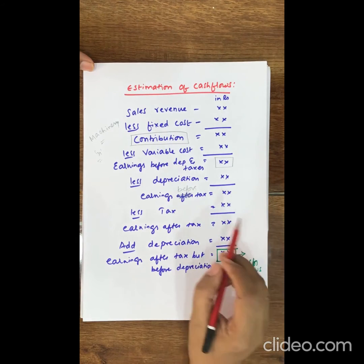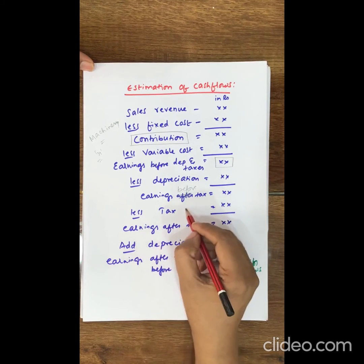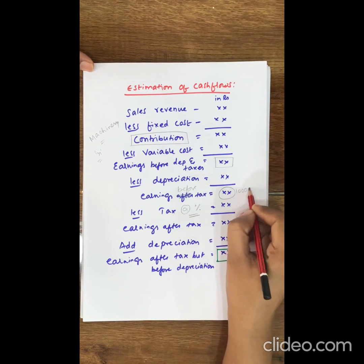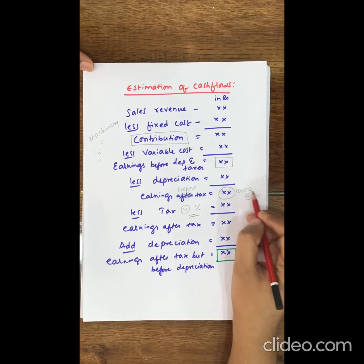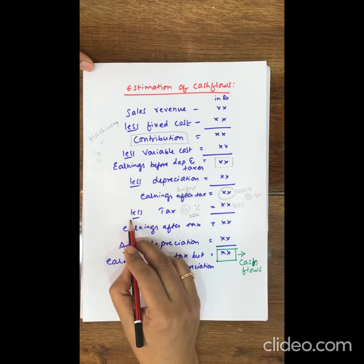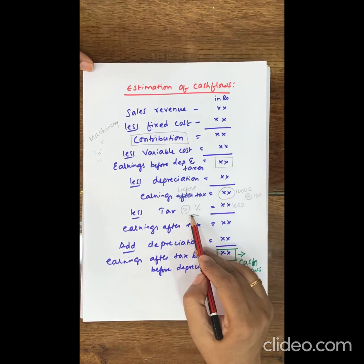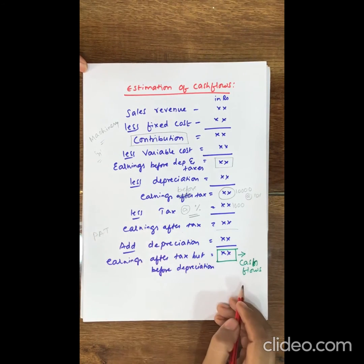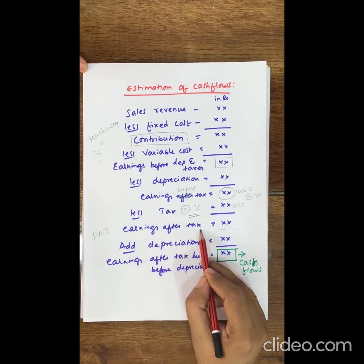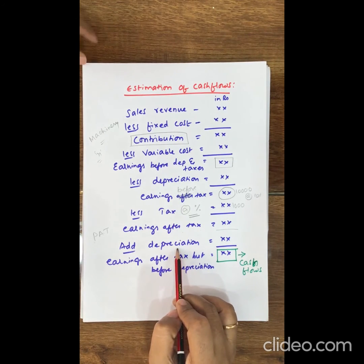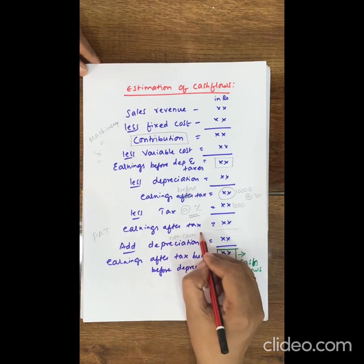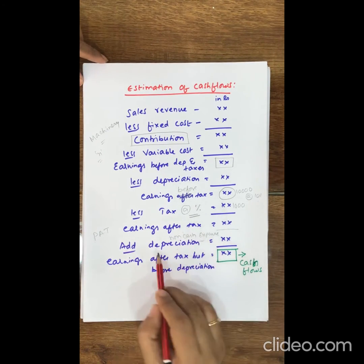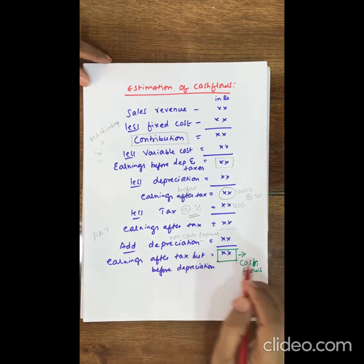You get earnings before taxes. Now you charge tax, which will be given in terms of some percentage. For example, if earnings before taxes is 10,000 rupees at the rate of 10% tax, you pay 10% on 10,000 rupees as tax. Then you get earnings after tax, also called profit after tax. To this profit after tax, you add back depreciation, which is a non-cash expense. Now you get earnings after tax but before depreciation — this amount is called cash flows.